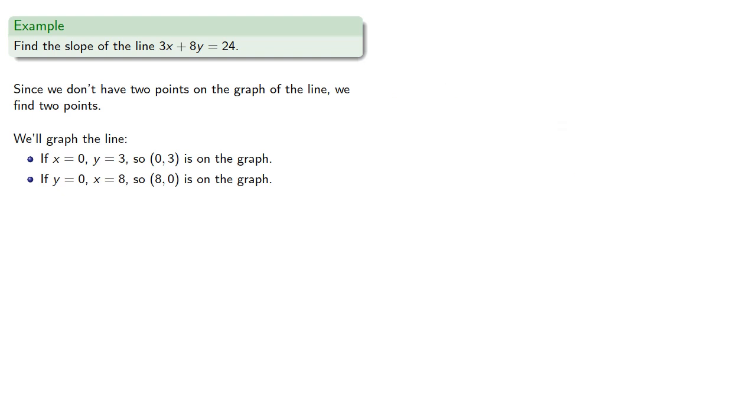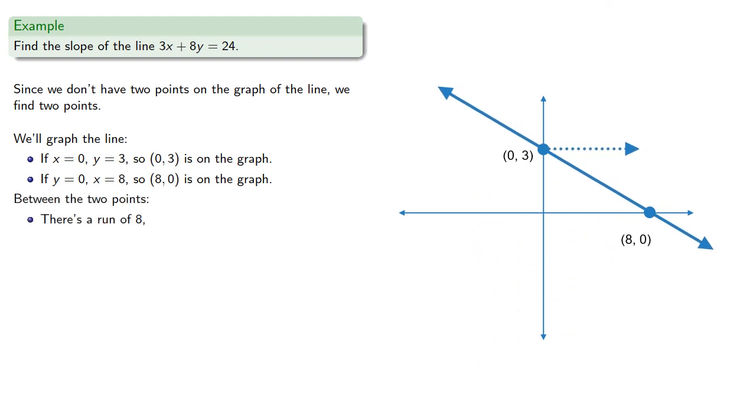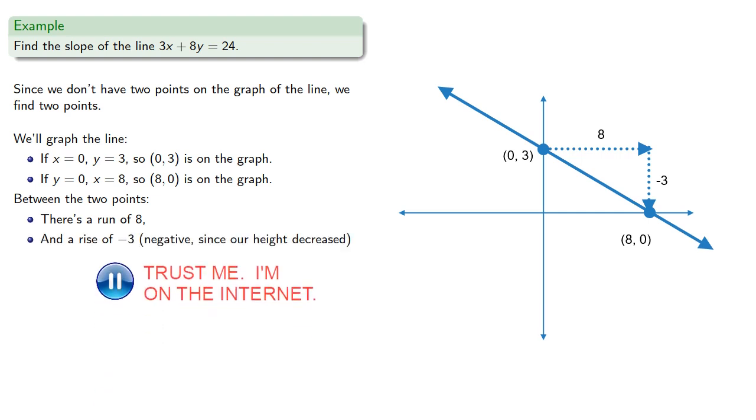And now that we have two points on the graph, we can graph the line, and between the two points, we see that we have a run of 8, and a rise of negative 3, negative since our height decreased, and the slope, rise over run, negative 3 eighths.